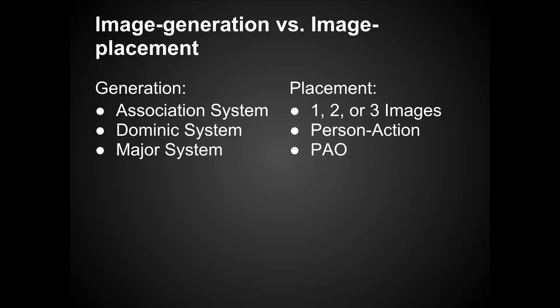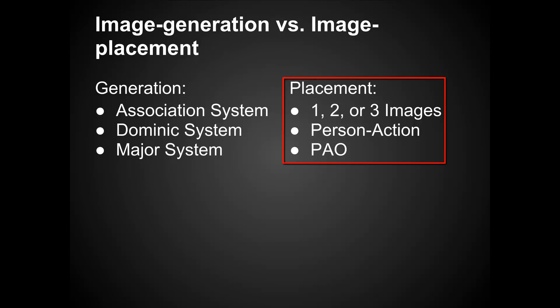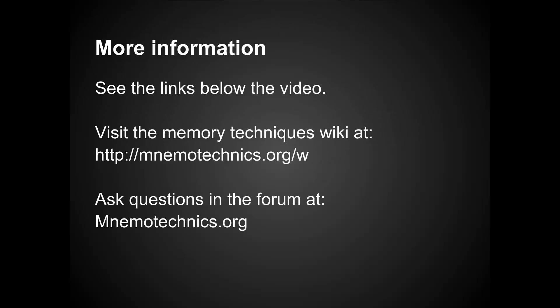So back to the main point of the screencast — there's a difference between image generation and image placement. Image generation systems include the association system, the Dominic system, and the major system, and you can combine any image generation system with any image placement system. The image placement systems would be the 1, 2, or 3 image system, person action system, or a PAO system. If you have any questions, you can leave a comment below, visit the Memory Techniques Wiki at memotechniques.org/w, and there are pages about all of these systems with a lot of information. Hope that helps. Thank you.